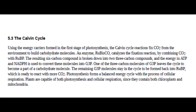The resulting six-carbon compound is broken down into two three-carbon compounds, and the energy in ATP and NADPH is used to convert these molecules into G3P. One of the three-carbon molecules of G3P leaves the cycle to become part of a carbohydrate molecule. The remaining G3P molecules stay in the cycle to be formed back into ribulose-biphosphate, which is ready to react with more carbon dioxide.